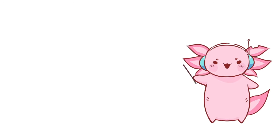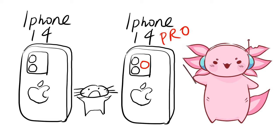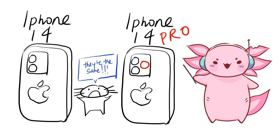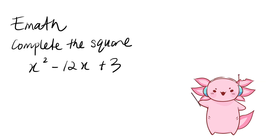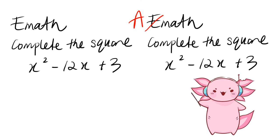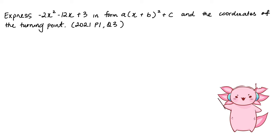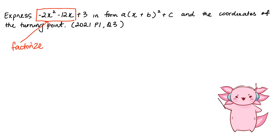You know how there's the iPhone 14 and the iPhone 14 Pro, but they're basically the same thing? So this topic is the same thing as the E-Math version of completing the square, but instead of adding one camera, we're just adding one number in front of the x-squared term. Let's try this example. We start by factorizing the x-squared and the x term so that the coefficient of the x-squared term is 1.